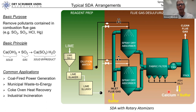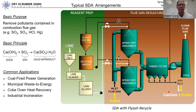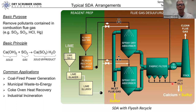Another common configuration is the SDA with fly ash recycle. This is the same as the single-pass system except some of the FGD byproduct — the solid product — is captured and recirculated back into the system as a solid. It is conveyed from the fabric filter to a storage vessel, then fed into a second tank, mixed with water, and that recycle slurry — called the fly ash recycle slurry — is injected alongside fresh lime slurry through the rotary atomizers into the flue gas.